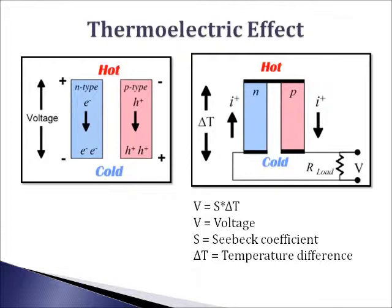A thermoelectric generator is a solid state device used to convert heat directly into electricity. They work by building up a temperature gradient between the two sides of the generator. The electrons at the hot end have more energy and will move towards the cold end, which will become more negatively charged. This temperature difference creating a voltage is called a thermoelectric effect.